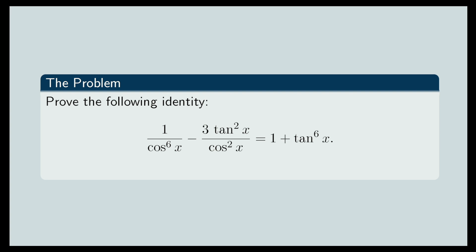Prove the following identity: 1 over cosine x to power 6 minus 3 tan x to power 2 divided by cosine x to power 2 equals 1 plus tan x to power 6.